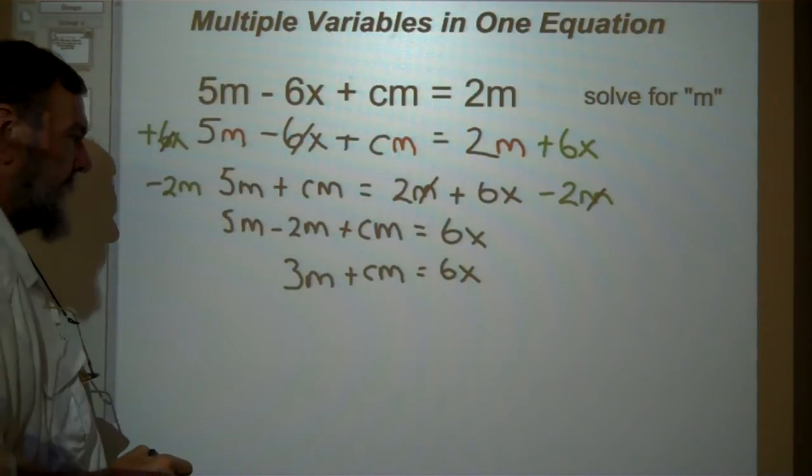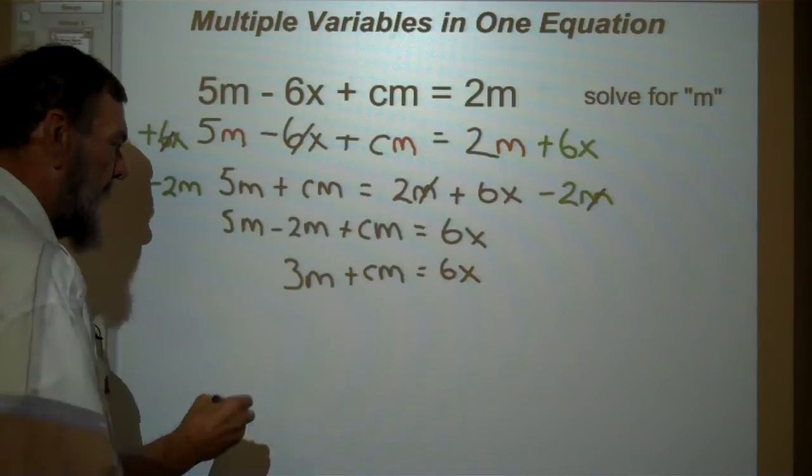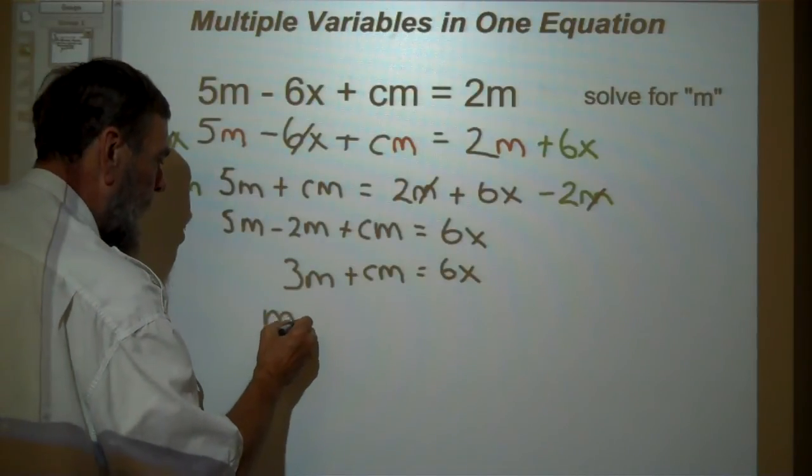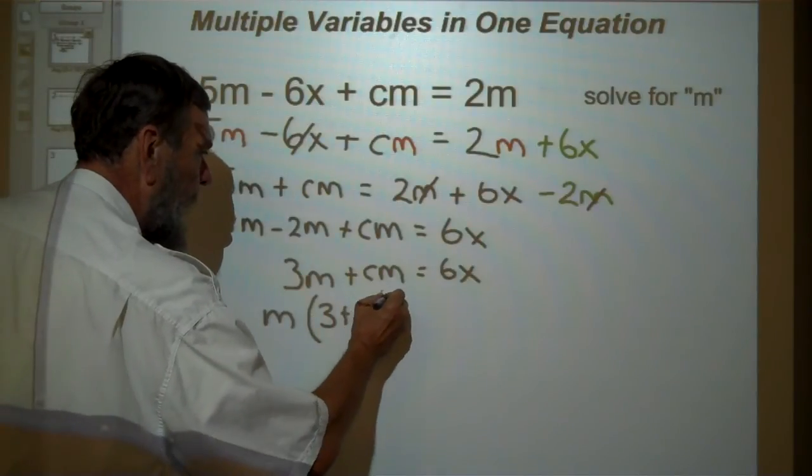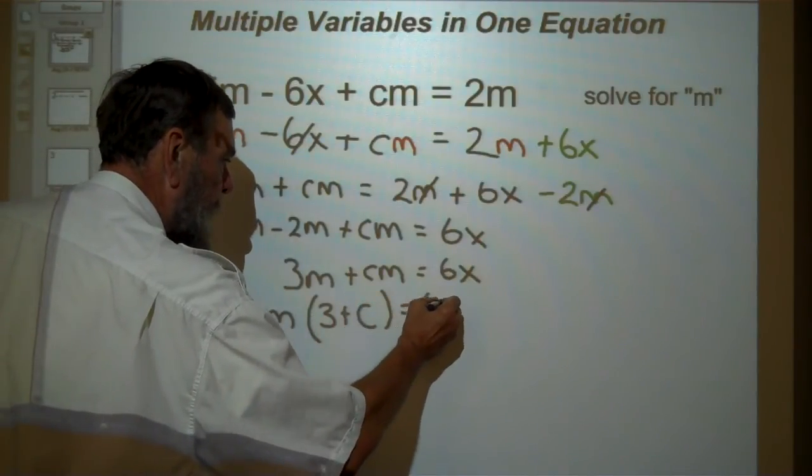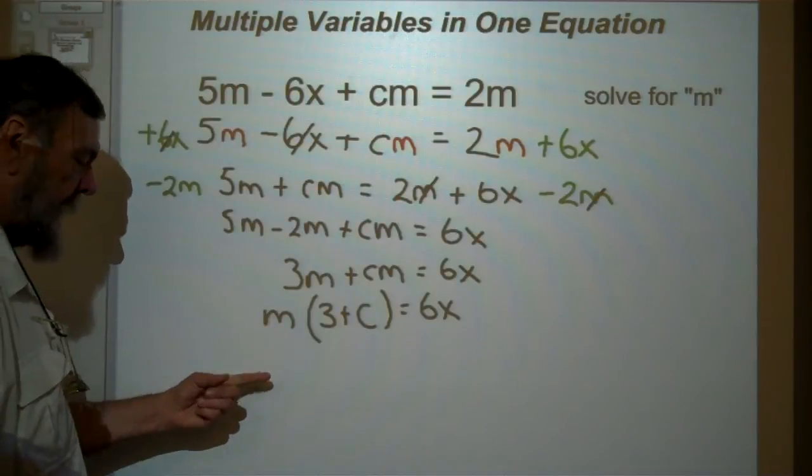Here's the key to the whole problem. Factor out an m. m times the quantity 3 plus c equals 6x. Now we have 1m.